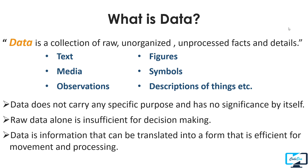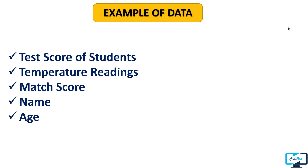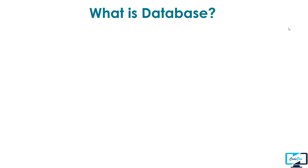Here are some examples of data: test scores of students, temperature readings, match scores, name or age — all these are data. For example, a test score of a student is of no use until we make a decision out of it, like the average of scores, or whether the student passed or failed.